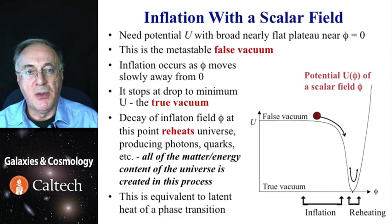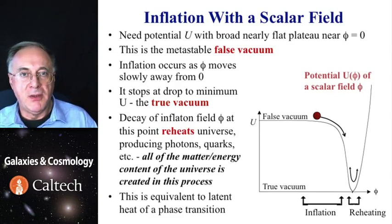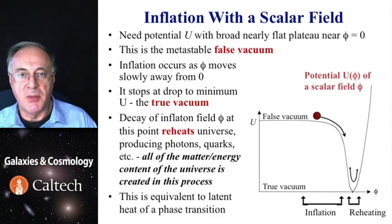So in this schematic, the universe rolls down the scalar field potential. So the decay of the field reheats the universe from that excess energy, and all of the matter energy content of the universe can be created in that process.